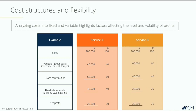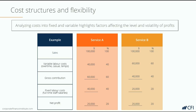Let's compare that to Company B. It has the same revenue on the top line, but a different proportion of variable cost and fixed cost with the same net profit. So what we see here is that Company A has higher fixed costs than Company B. Let's do some analysis to see what that really means for the business.